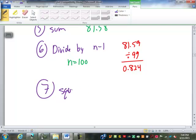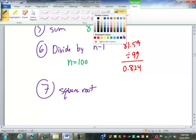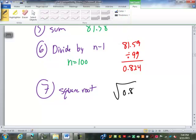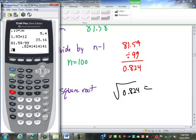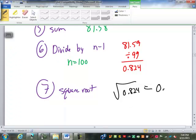So we're going to take the square root of 0.824. I'm just going to use the answer function on my calculator to take the square root of the previous answer. 0.908, or 0.91 is my standard deviation. So what that is saying is on average each number in this list is 0.91 units away from the mean.